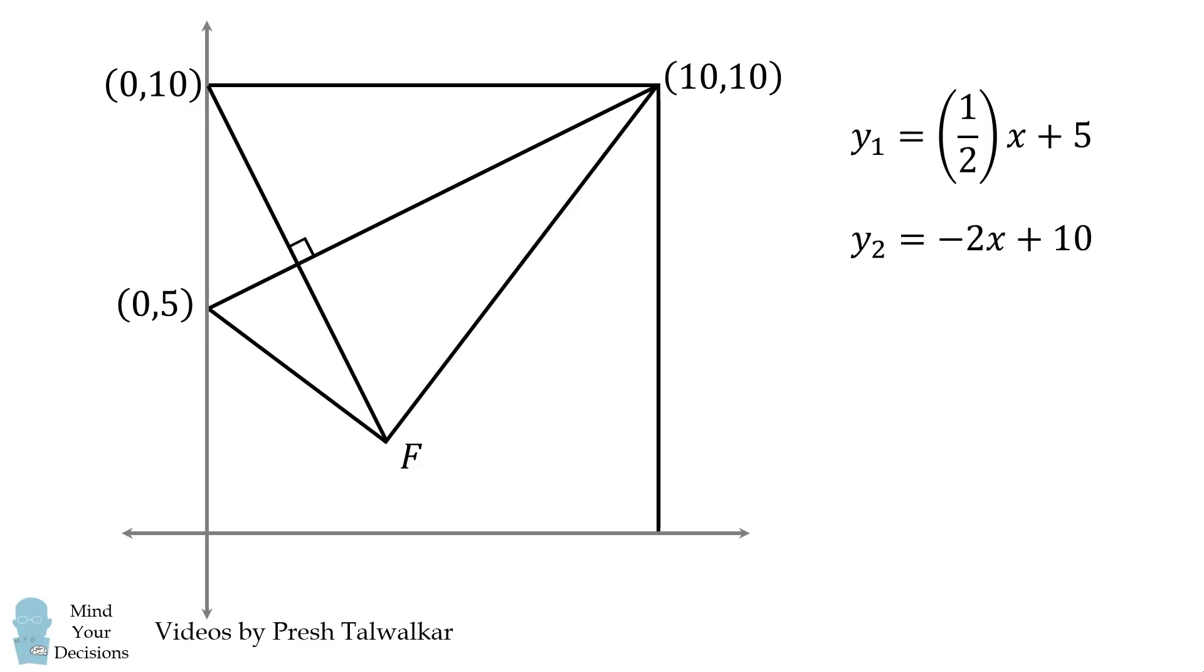To find the intersection of these two lines, we set the equations equal to each other, and we can readily solve that x is equal to 2 and y is equal to 6. Now this point will exactly be the midpoint between 0, 10, and F. Suppose F has the coordinates of P and Q. We thus have 10 plus Q all over 2 is equal to 6. This means Q is equal to 2, and that's exactly the vertical distance.